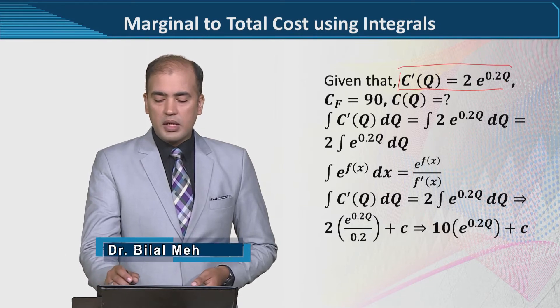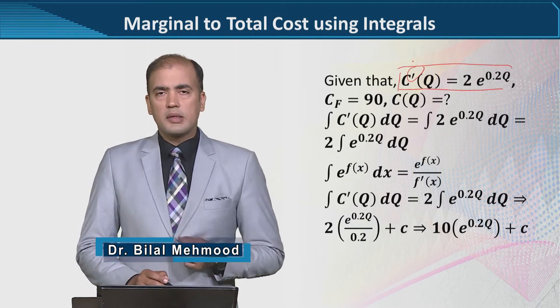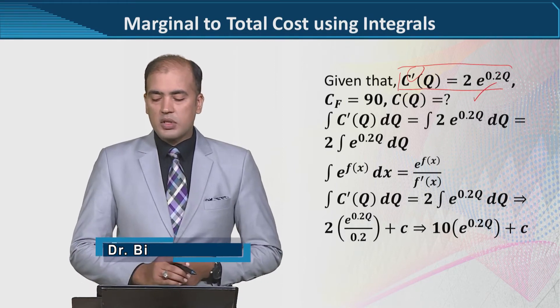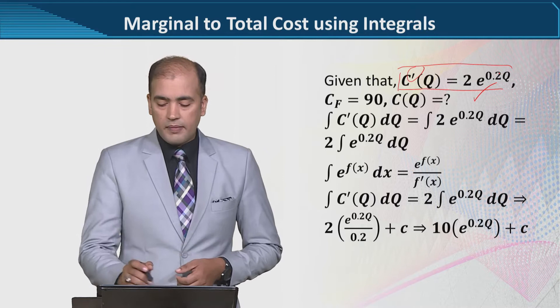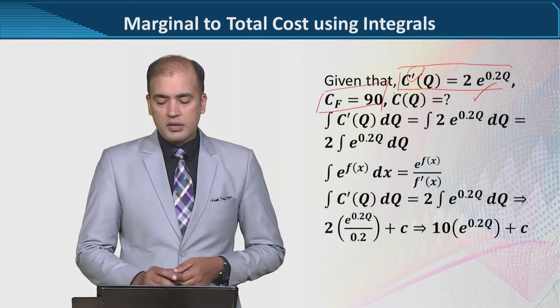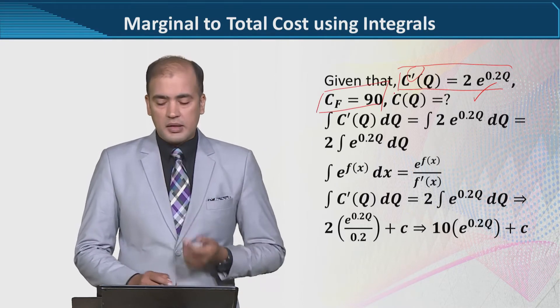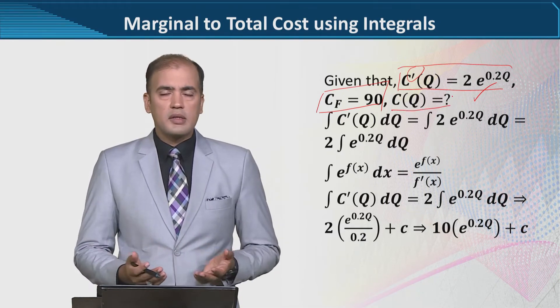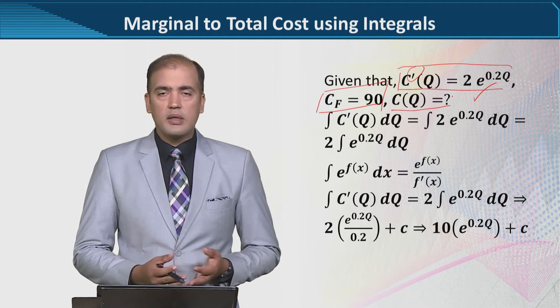This is a marginal cost function, and this bar is showing this thing. This is the exact function, which is exponential in nature. And besides, we have told this, that the fixed cost is 90. And we have C(Q), which is to be found. That is the total cost function. We are in search of that.